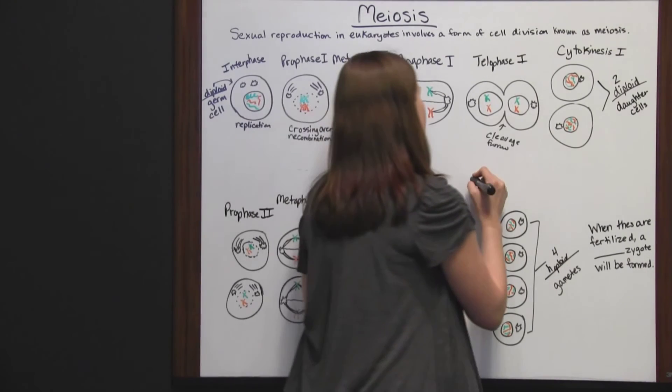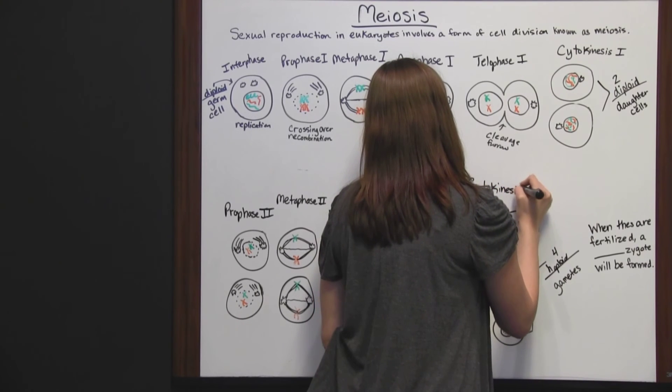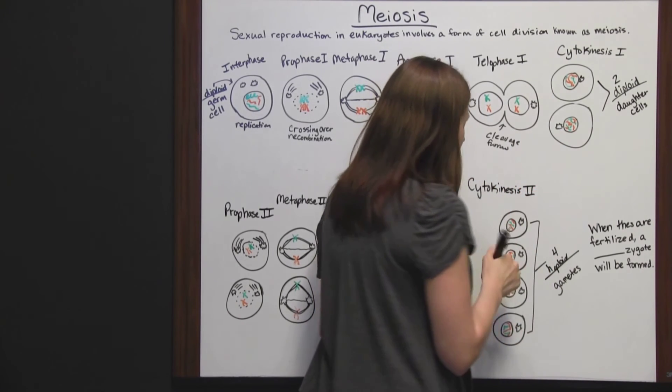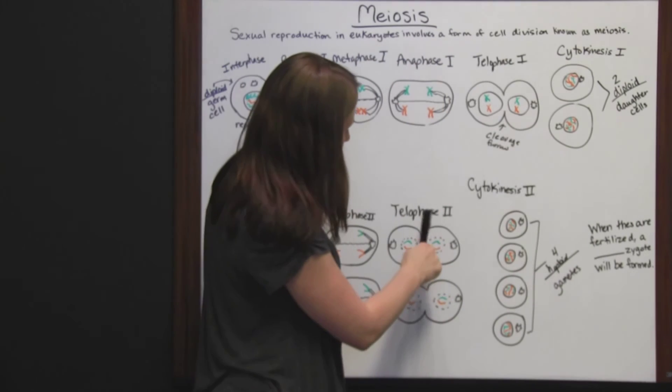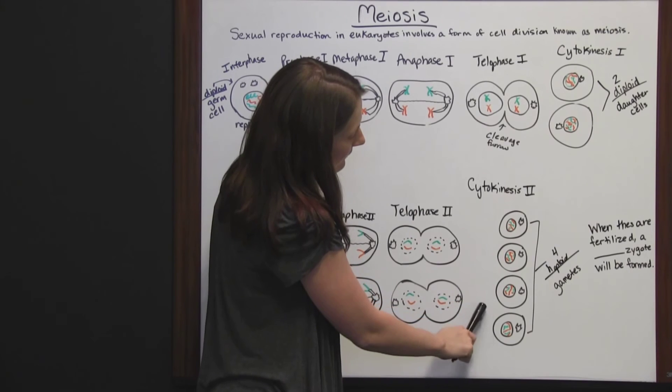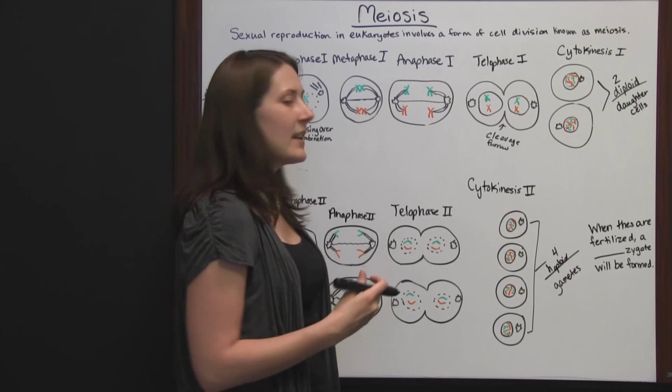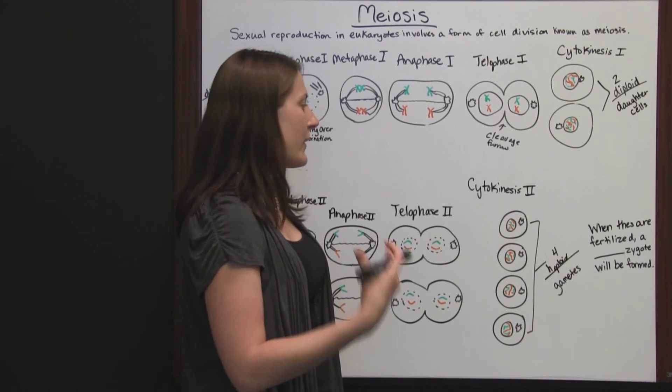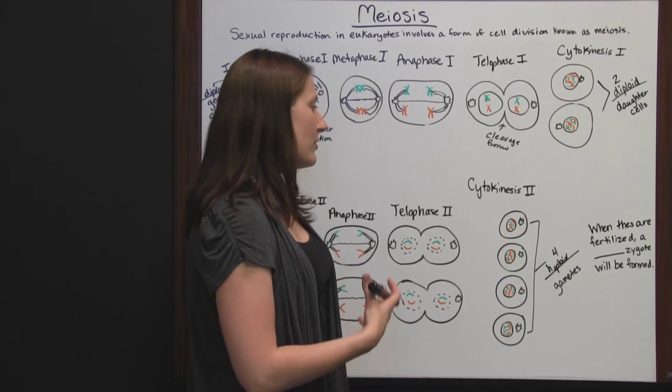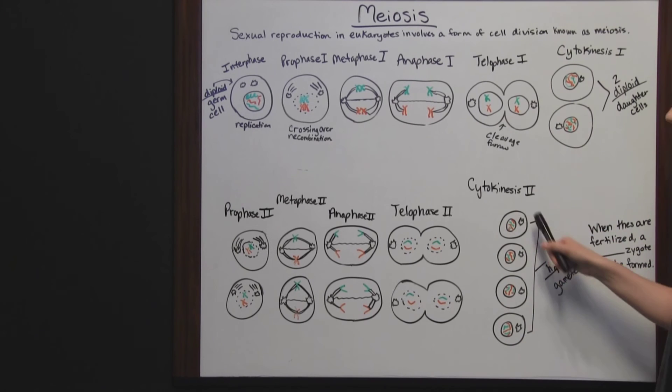In cytokinesis II, the cytoplasm divides between these new cells. Now we have four haploid gametes, meaning they each have just one set of genetic information. They'll need a partner to reproduce.